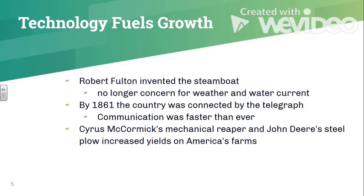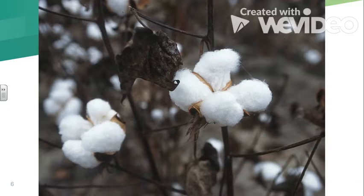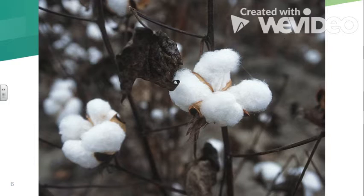You get larger yields in crops because of a couple of inventions — McCormick's reaper and John Deere's steel plow — so Americans are producing larger quantities of food. But probably the most important agricultural product of the 19th century is something you can't eat, and that is cotton. Cotton pretty much defines the U.S. economy for the first 80 years of the nation's existence. That wasn't always the case — before the cotton gin, you had to hand-pick seeds and cotton trash away from the cotton fiber.